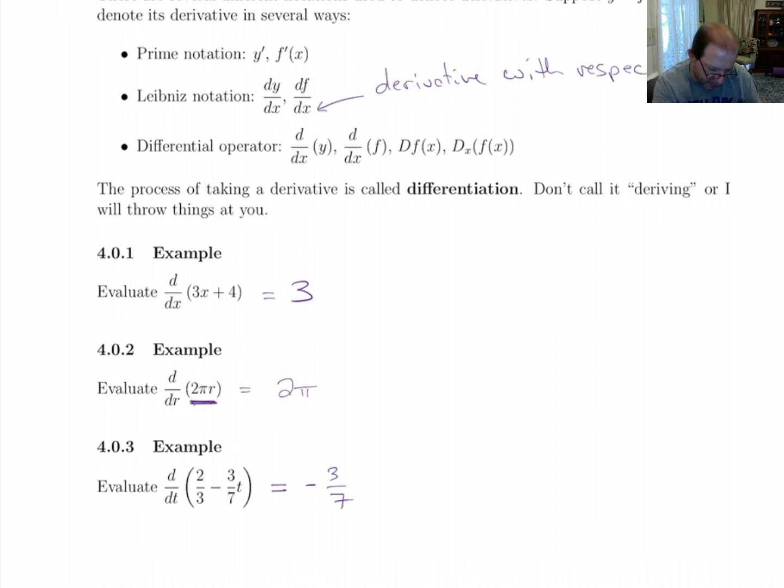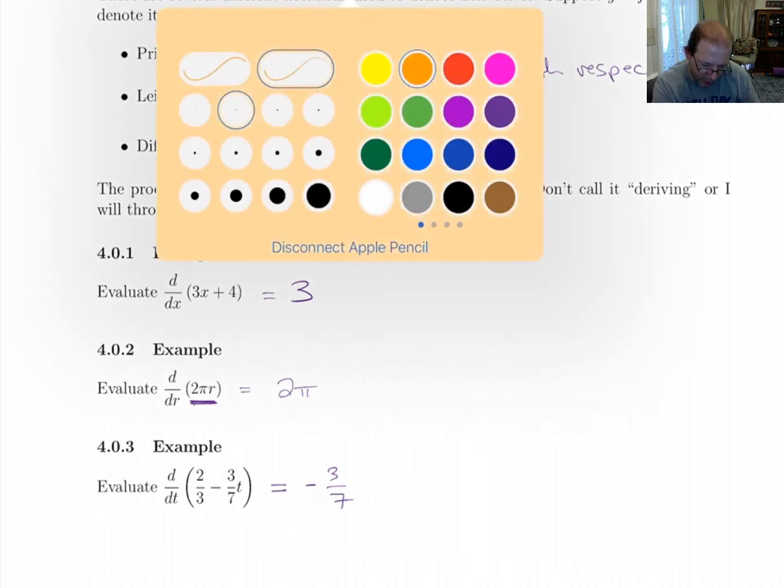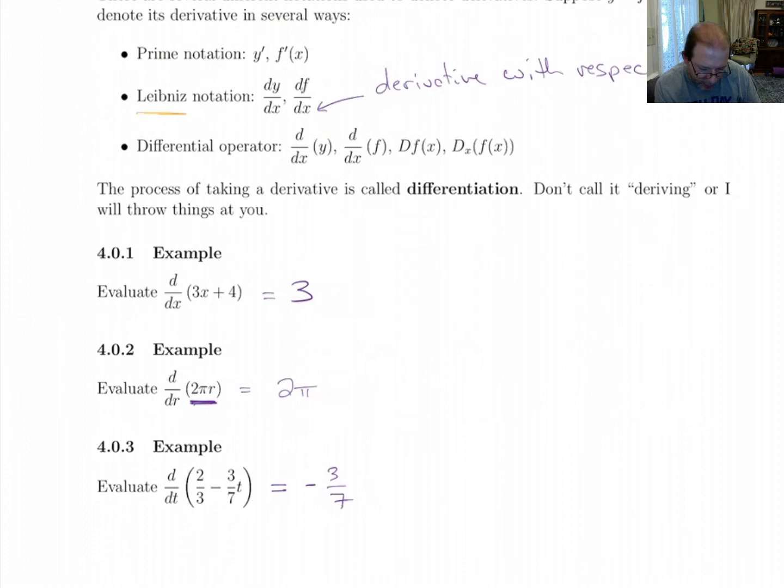Leibniz, just to go on a historical tangent, Leibniz was a German guy who discovered calculus. Newton discovered calculus and so did Leibniz. They actually had a big fight about it. And there's some information in the textbook about it.